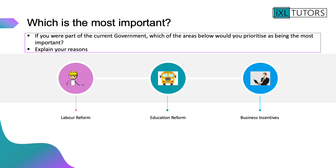When thinking about government policies, it's really important to be able to rank which one is the most important — think about prioritising the different factors. If you were part of the current government, which area would you prioritise as the most important: labour reform, educational reform, or business incentives? Rank those from most to least important and explain why. Pause here and do that.